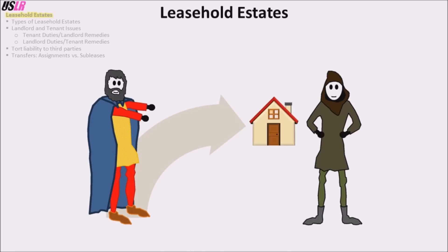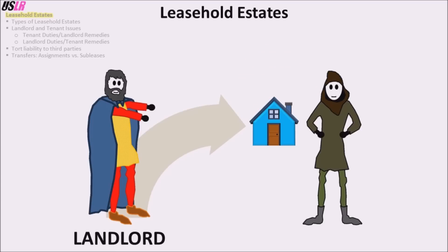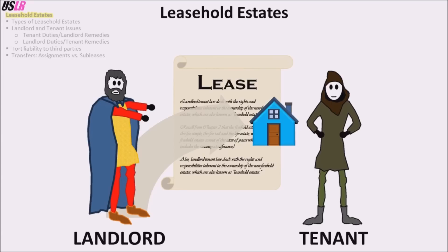A property owner can enter into an agreement to let someone else use his property for some time. When the use is exclusive, non-revocable, and in exchange for money, a new kind of estate is created: the leasehold estate, also known as the non-freehold estate. A leasehold creates a legal relationship where the property owner is called the landlord. The landlord and tenant are in a lease agreement, also called a rental agreement or contract to rent.